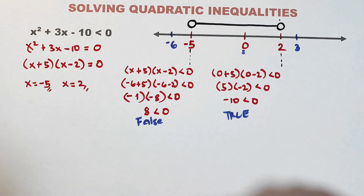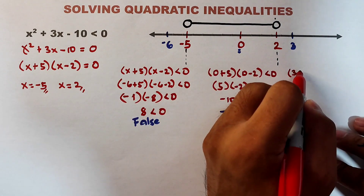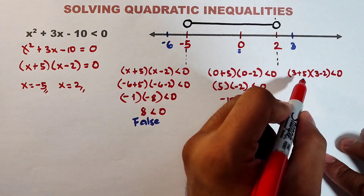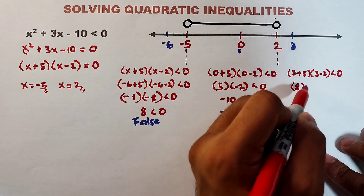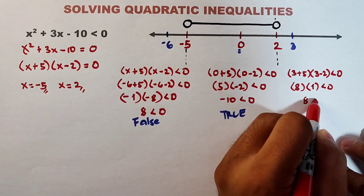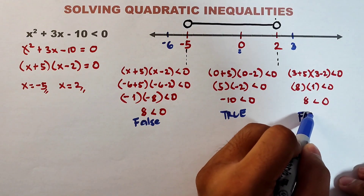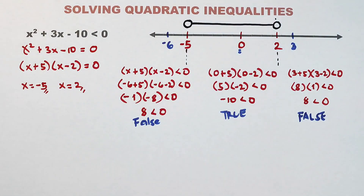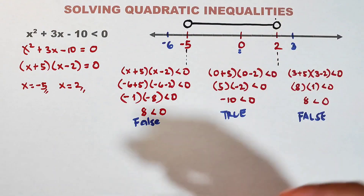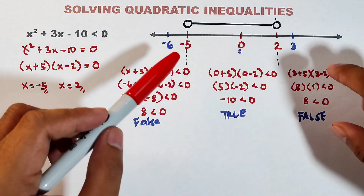Let's prove the right region is not a solution by testing x = 3: (3 + 5)(3 - 2) < 0 gives 8 × 1 = 8 < 0. Is this true or false? Definitely false. So the region on the right side of 2 is not included in our solution. The only solutions are the numbers between -5 and 2.